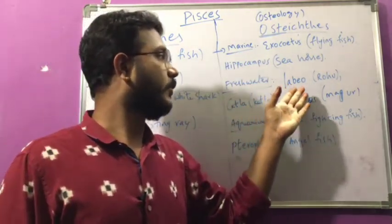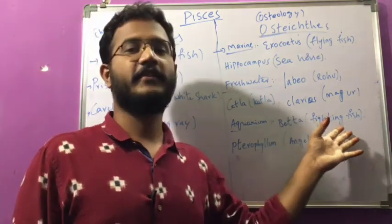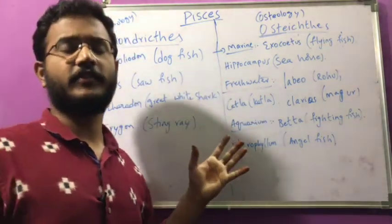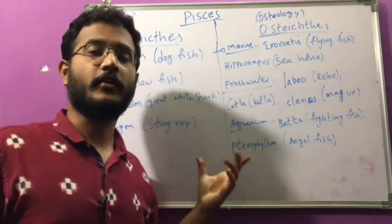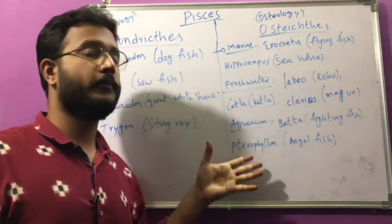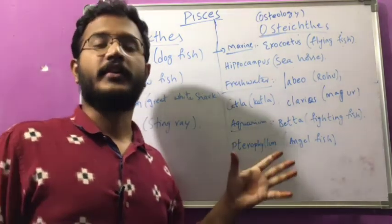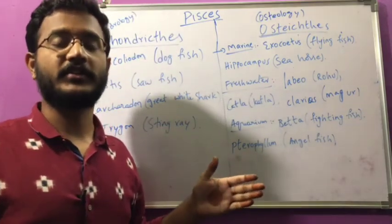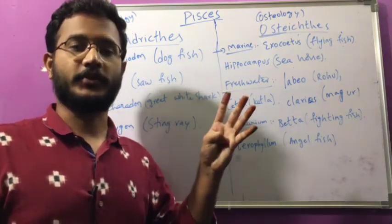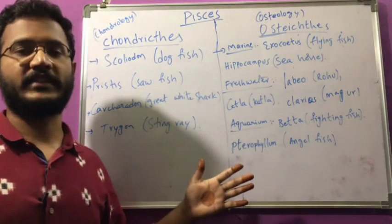Freshwater Osteichthyes are Labeo (rohu), Katla (catla), and Clarias (magur fish). Aquarium fishes are Betta (fighting fish) and Pterophyllum (angel fish). These complete the superclass Fishes with classes Chondrichthyes and Osteichthyes. Tomorrow we will start Amphibia, which comes under Tetrapods because they have four legs. The remaining classes — Amphibia, Reptilia, Birds, and Mammals — all come under Tetrapods, while fishes have fins, not true limbs.